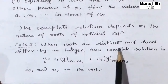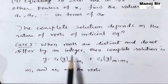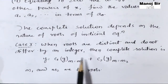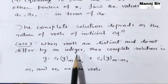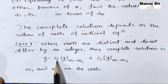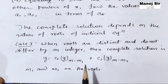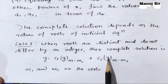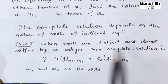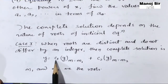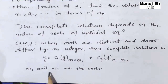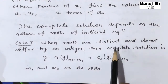Case number one: when the roots are distinct and do not differ by an integer. Distinct means different roots, and do not differ by an integer means if you subtract both roots that will not give an integer. Then the complete solution is given by y equals c1 times y when m equals m1, plus c2 times y when m equals m2. Here m1 and m2 are both distinct roots.